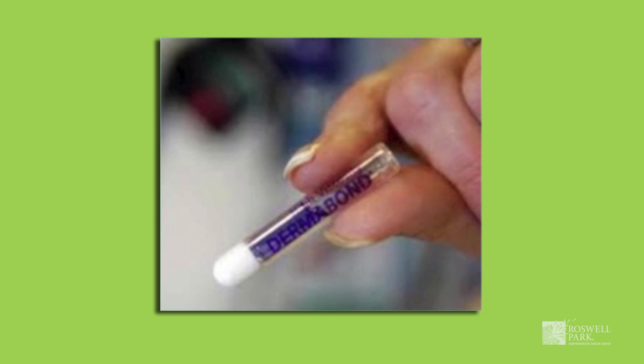Sometimes we'll use something called dermabond. It's almost like a super glue that allows you to shower and resume your normal activities fairly quickly. It's at the discretion of your surgeon and where the site of the lesion is and how well it is re-approximated or closed. By using steristrips or dermabond, we try to make the wound care as simple as possible, and you don't need to place any antibiotic ointments or anything else over top of the wound.